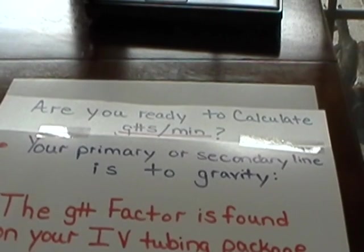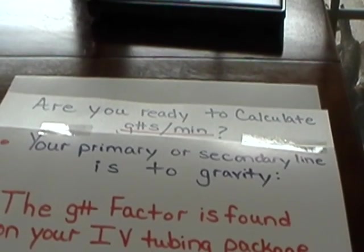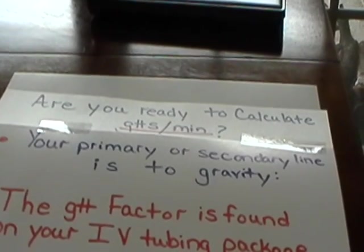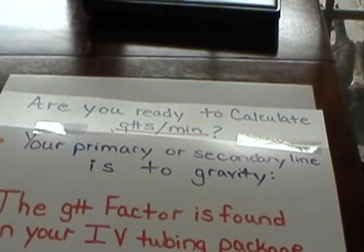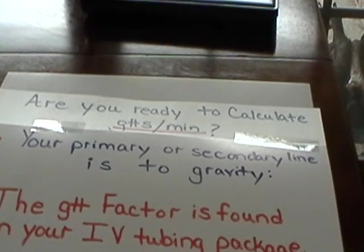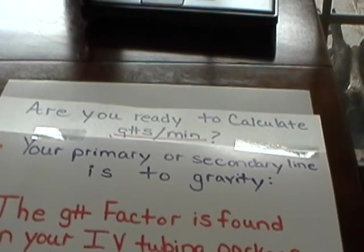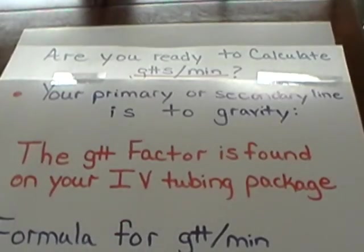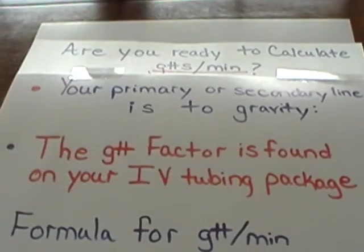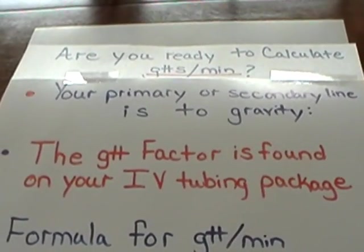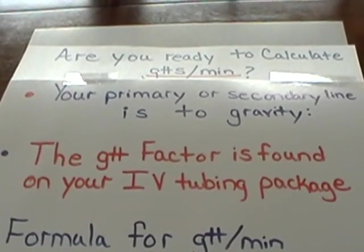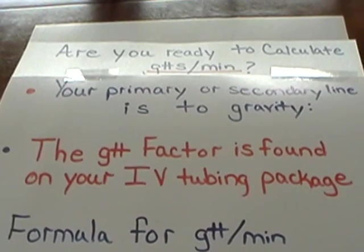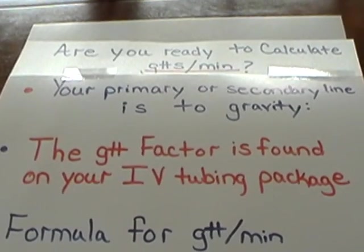Are you ready to calculate drops per minute for IV rates? When would you need to do this? When your primary or secondary line is to gravity. Where might this occur? It often occurs in the ER and in labor and delivery, and sometimes when you're working at smaller hospitals.